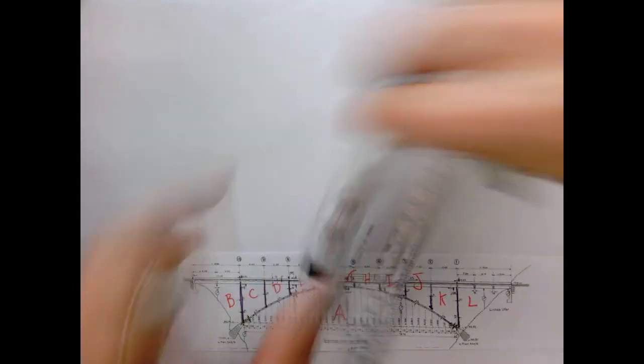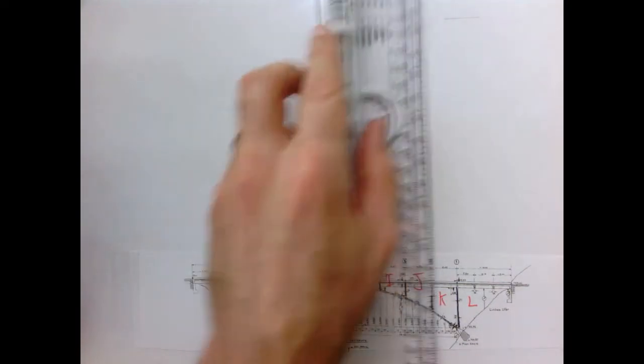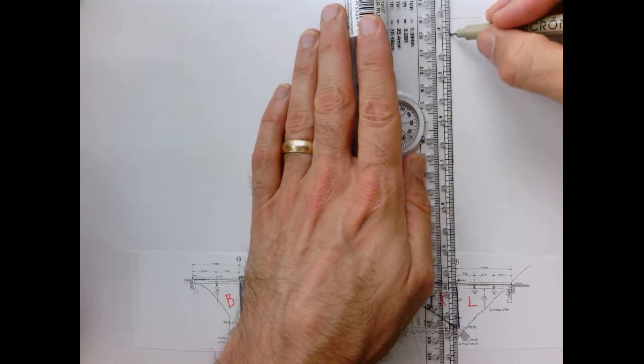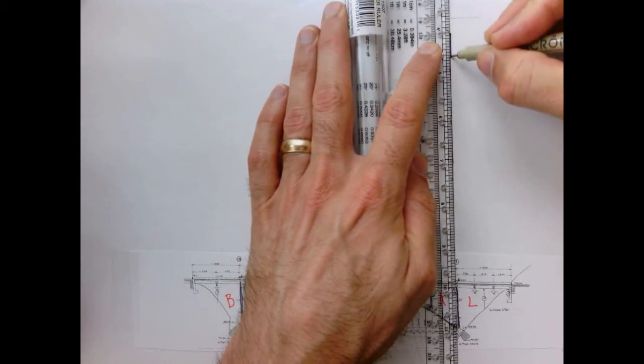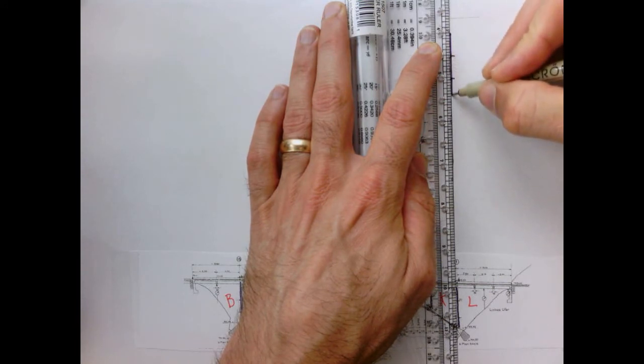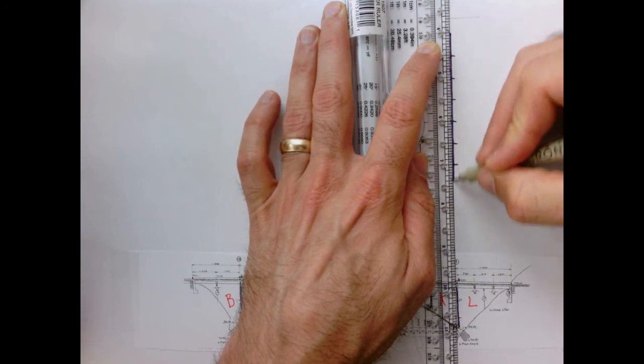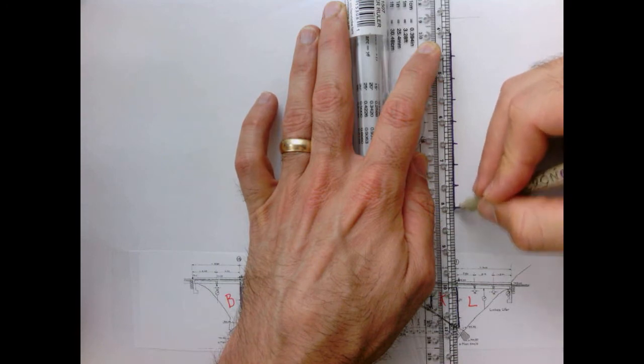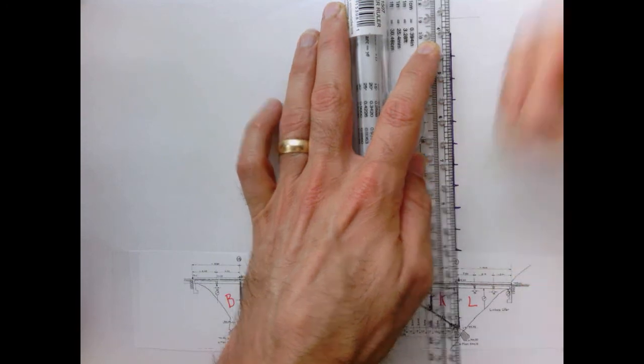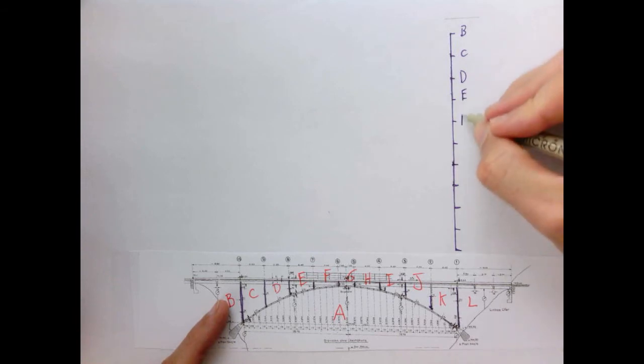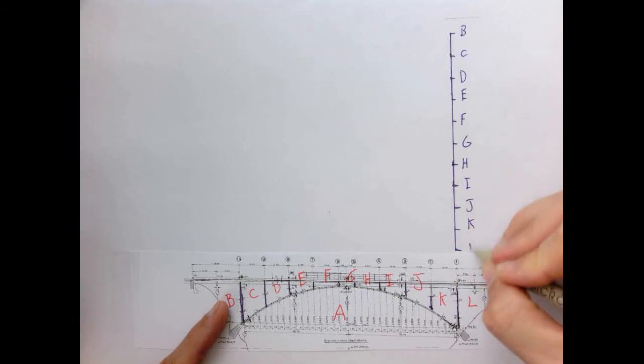So now let's draw our vertical load line and I'm going to use a half inch scale for this. So I'm going to draw a five inch line. Let's just start here. I'll make marks at each half inch. These are going to be points B, C, D, E, F, G, H, I, J, K, and L.